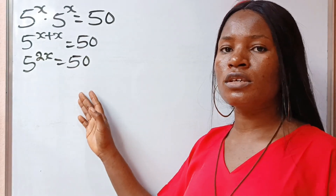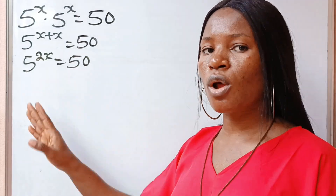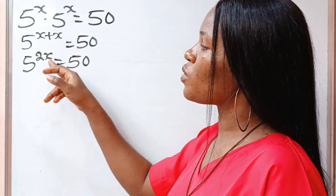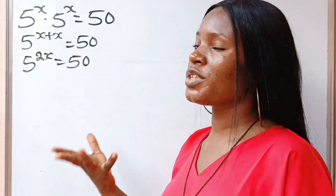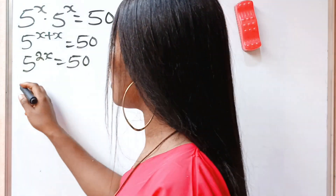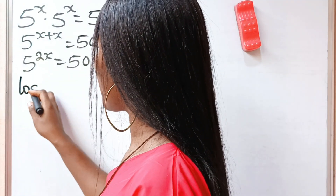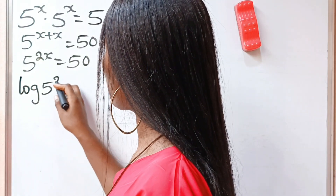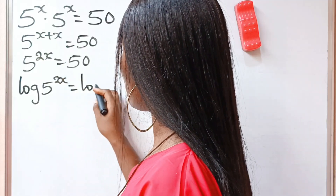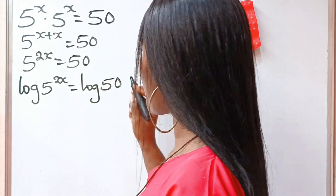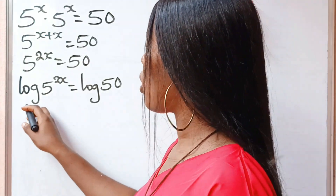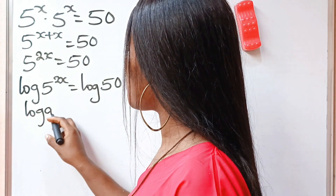Now the only way to solve this is to introduce log to both sides of the equation, since what we are looking for — which is x — is our exponent. So we introduce log, and we have: log of 5 to the power of 2x is equal to log 50.